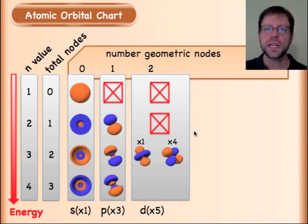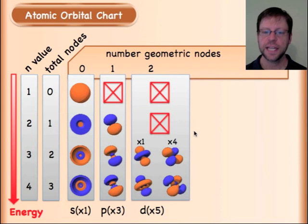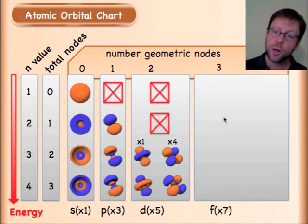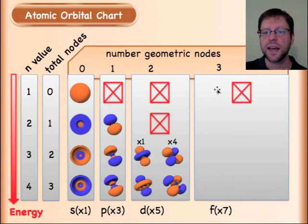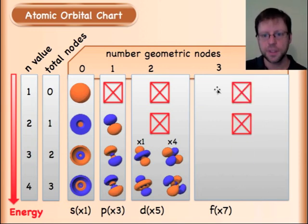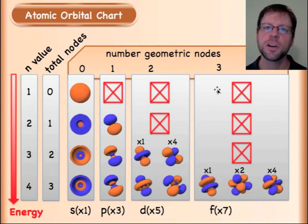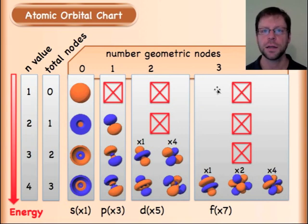Going further: at n equals four, d orbitals each have one additional radial node on top of the two geometric ones. And for f orbitals, requiring three geometric nodes, you cannot have them until the principal quantum number reaches four — because you need a minimum of three nodes available to you.